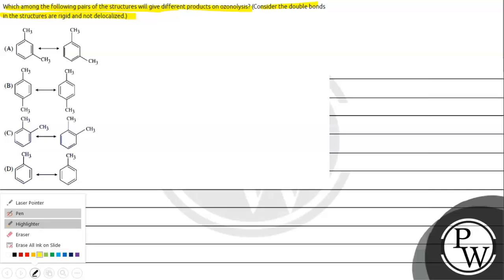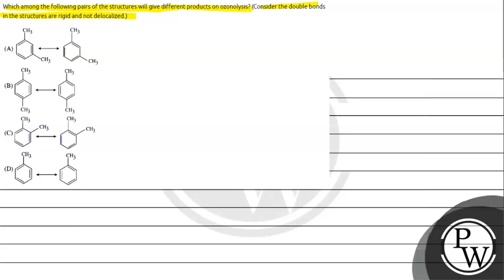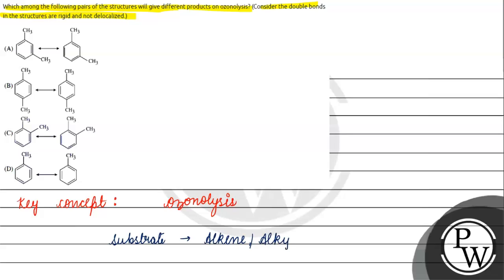The key concept for this question is ozonolysis. In ozonolysis, our substrate reacts with ozone. The first step involves ozone. The second step depends on reductive ozonolysis or oxidative ozonolysis. For reductive ozonolysis, we use DMS or zinc in acetic acid.